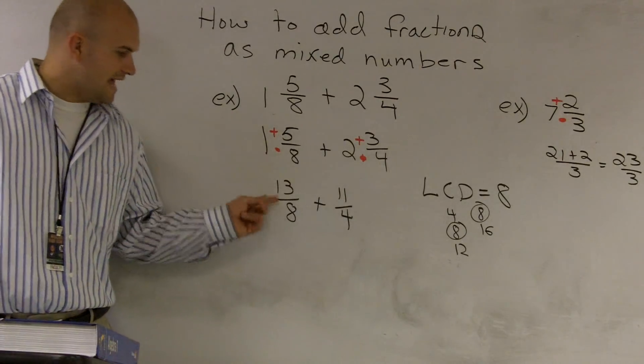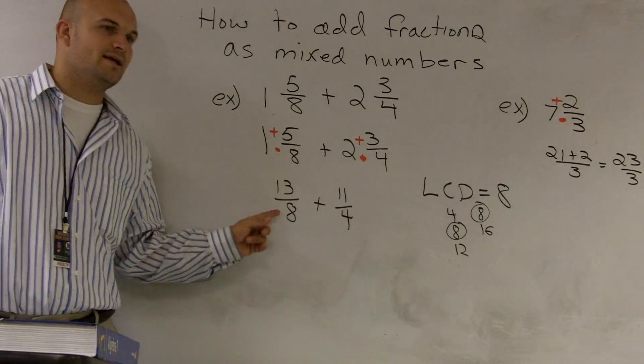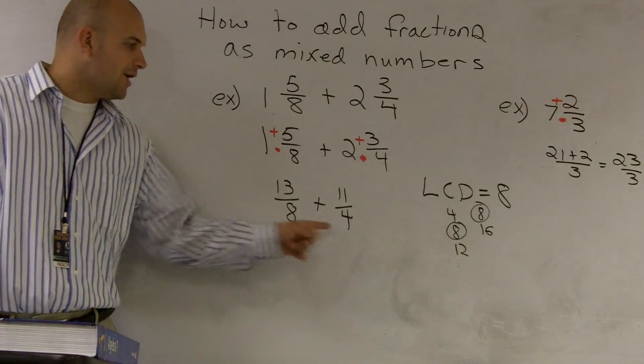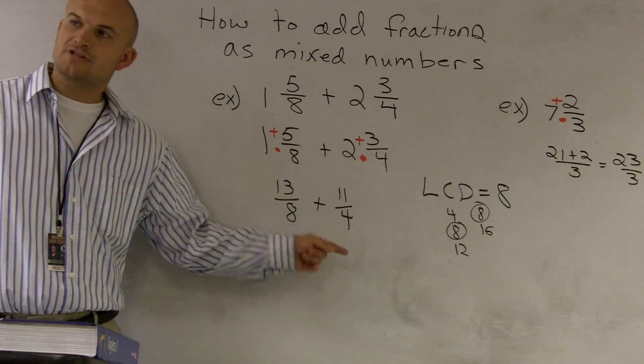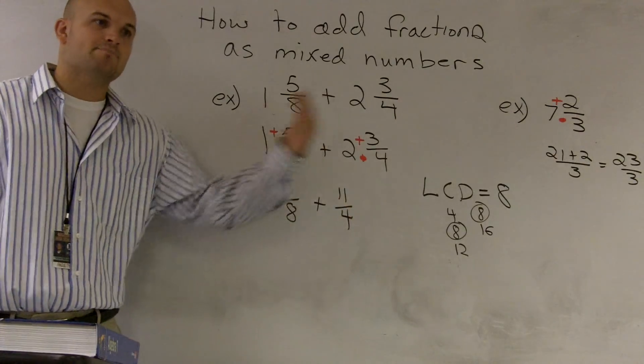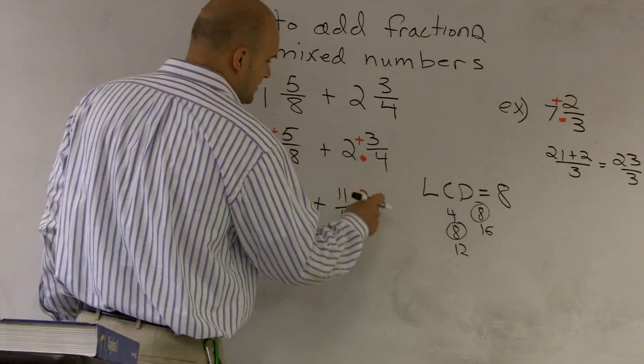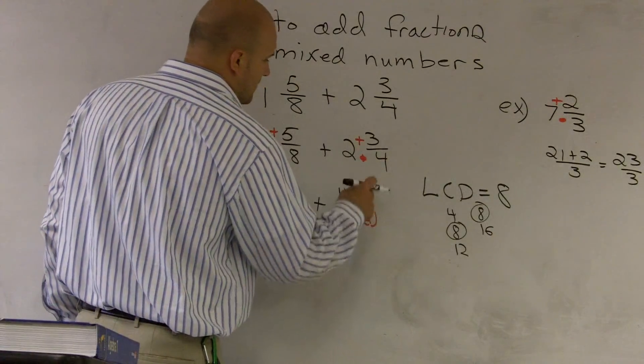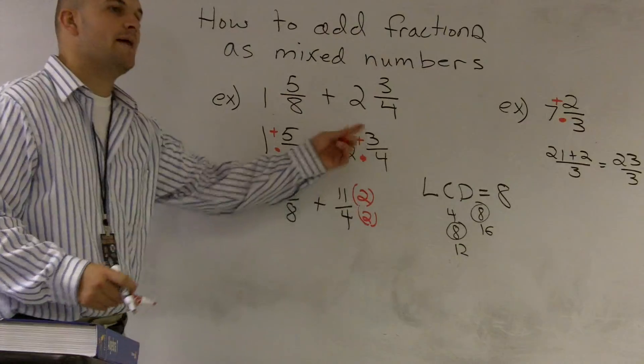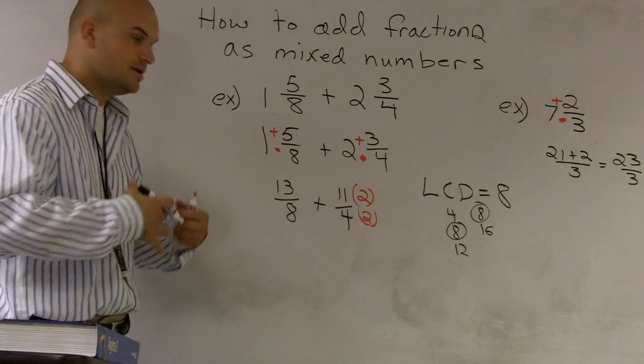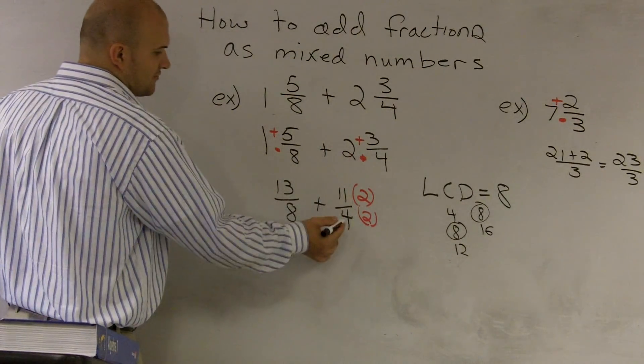So luckily for me, the LCD is already the denominator for this fraction. However, it is not the denominator for this fraction, so I need to multiply by a multiple to get the LCD. And that multiple ends up being 2. So I make sure I multiply by the top and the bottom to keep the fraction a multiple of its original fraction.